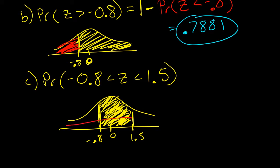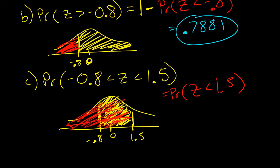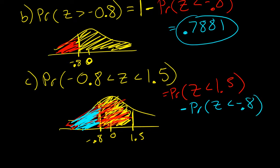When I use my calculator it finds a cumulative distribution — all the area behind whatever number I give it. If I start with P(Z < 1.5), that's too much area. I need to subtract off P(Z < -0.8), that tail. If I subtract off that blue tail, I'll be left with the yellow between area.